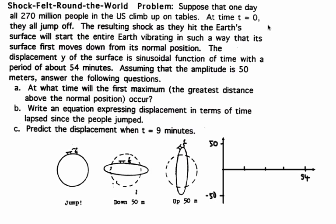The resulting shock as they hit the Earth's surface will start the entire Earth vibrating in such a way that its surface first moves down from its normal position. The displacement Y of the surface is a sinusoidal function of time with a period of about 54 minutes. Assuming that the amplitude is 50 meters, answer the following questions.